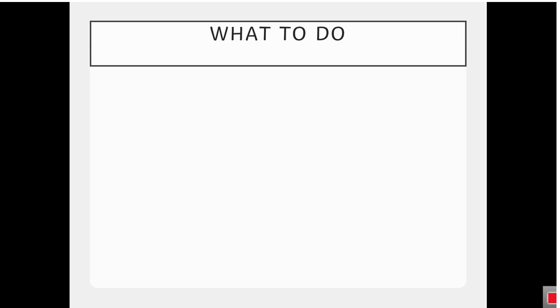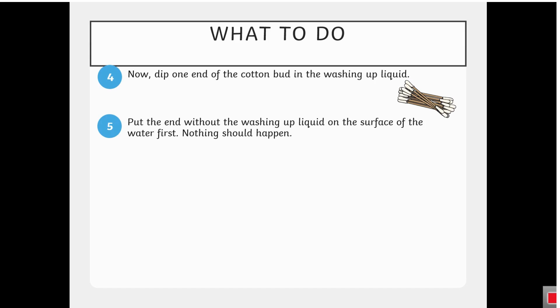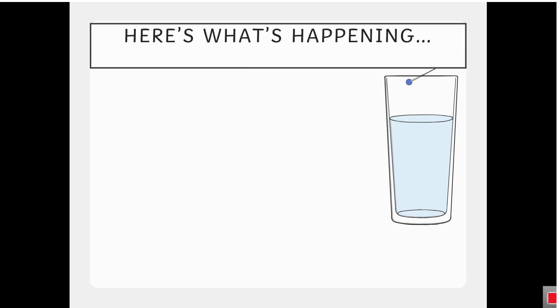What to do. Now, dip one end of the cotton bud in the washing up liquid. Put the end without the washing up liquid on the surface of the water first. Nothing should happen. Now, with the other end, touch the water surface. The pin or paper clip should now drop suddenly to the bottom.